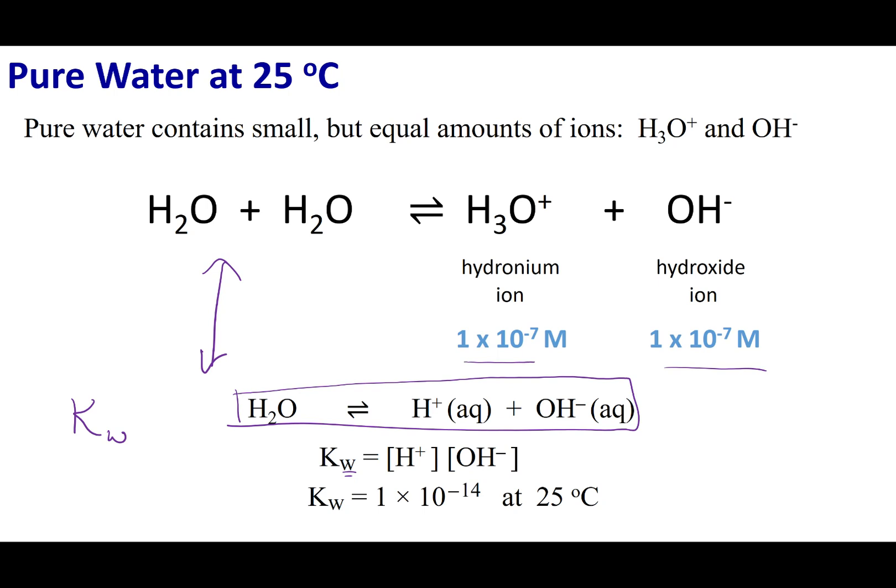So if I were to do the equilibrium constants, products over reactants, raised through their stoichiometric coefficients, what I would see is kw, the equilibrium constant, is only dependent on H plus and OH minus because water is a liquid. So then based off of this, I can calculate kw. And so kw at 25 degrees is a constant. It's 1 times 10 to the negative 14.